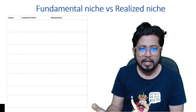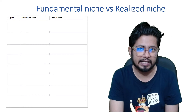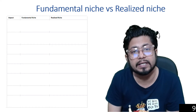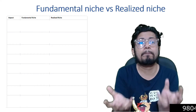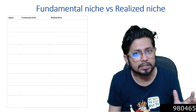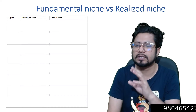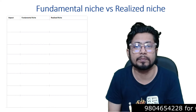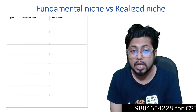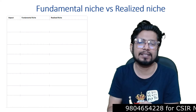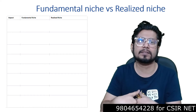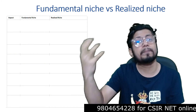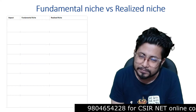Now let's come to the difference between fundamental and realized niche. The term 'fundamental' means whatever an organism is supposed to get in ideal conditions. In ideal conditions, an organism gets certain parameters, and the niche that organism should belong to is known as the fundamental niche. A realized niche is the reality of the environmental parameters that the organism is actually going through. So fundamental niche is theoretically possible; realized niche is the practical aspect of that niche.